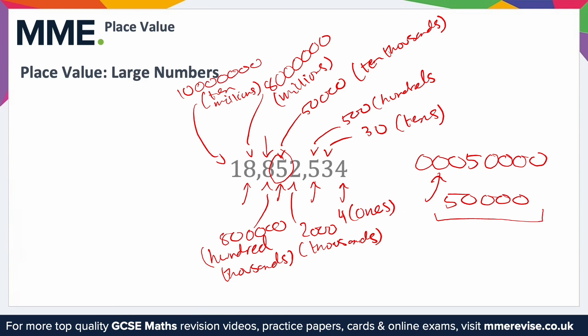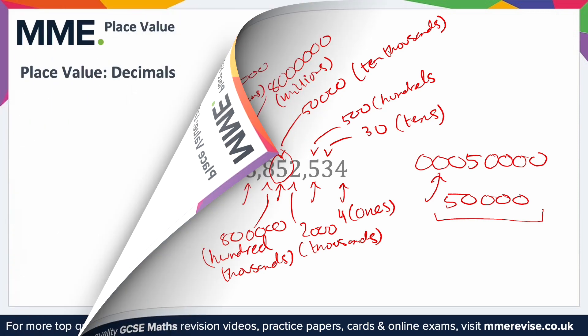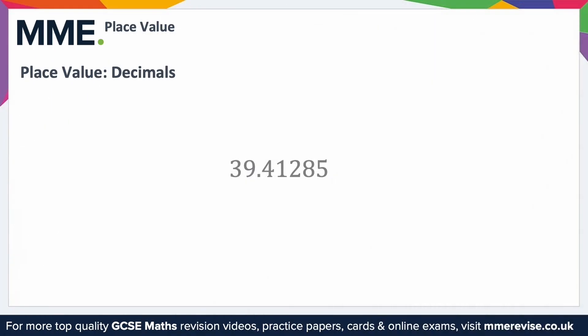This lets us read the full number: eighteen million, eight hundred and fifty-two thousand, five hundred and thirty-four. Place value also applies to numbers after the decimal point.